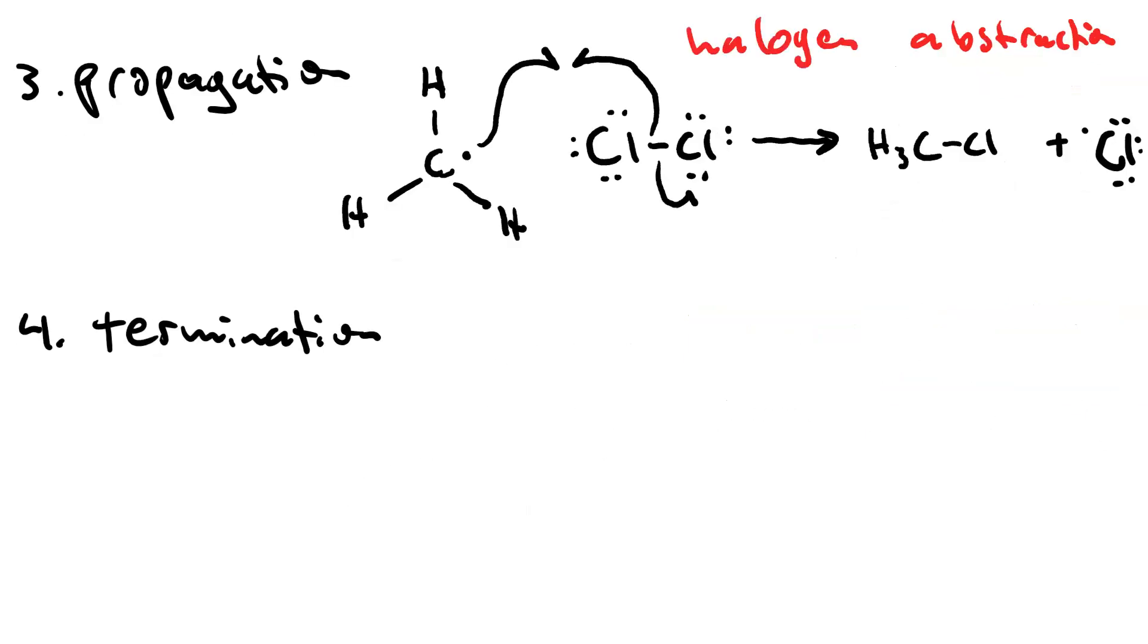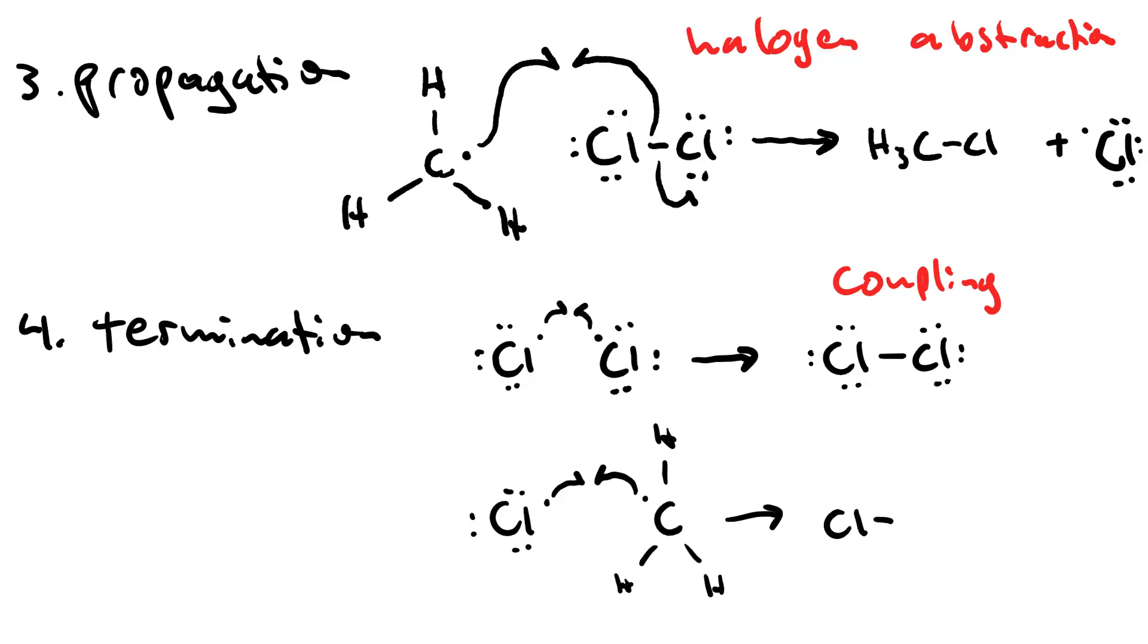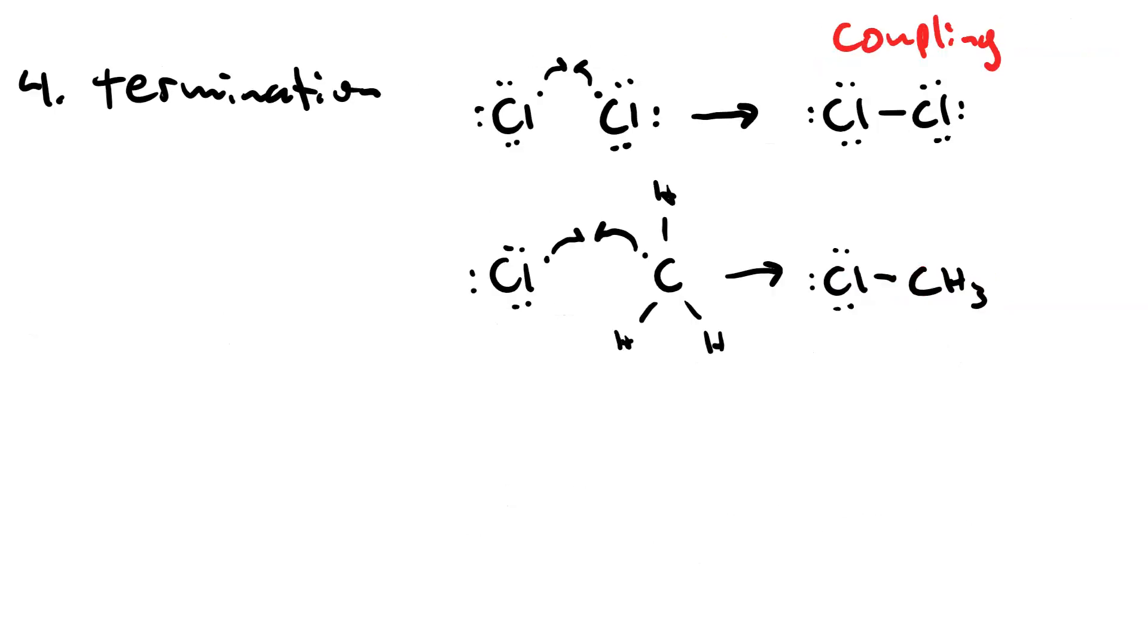The reaction terminates via coupling. Coupling of two chlorine radicals, for instance, to regenerate the chlorine molecule. Or we could have coupling of a chlorine radical with a methyl radical to generate another methyl chloride. There's a third kind of coupling we could have here, where two methyl radicals couple. This would generate ethane.